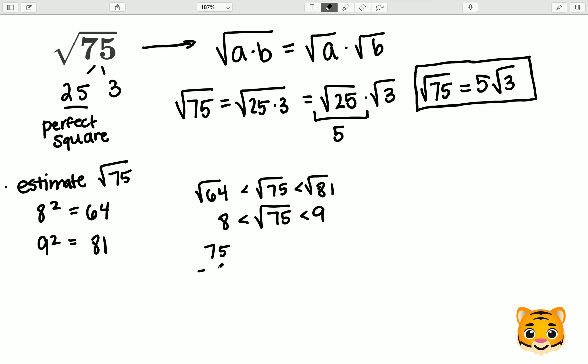We would do 75 minus 64 to get 11, which means that 75 is 11 away from 64. And then do 81 minus 75 to get 6, meaning that 75 is 6 away from 81.